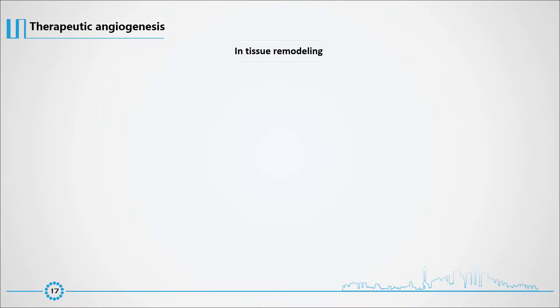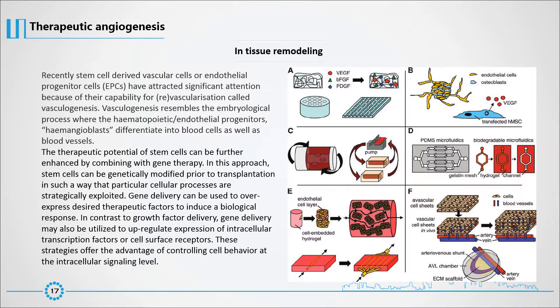Recently, stem cell-derived vascular cells or endothelial progenitor cells (EPCs) have attracted significant attention because of their capability for re-vascularization called vasculogenesis, which resembles the embryological process where hemangioblasts differentiate into blood cells as well as blood vessels. The therapeutic potential of stem cells can be further enhanced by combining with gene therapy. In this approach, stem cells can be genetically modified prior to transplantation so that particular cellular processes are strategically exploited. Gene delivery can be used to overexpress desired therapeutic factors or to upregulate expression of intracellular transcription factors or cell surface receptors, offering the advantage of controlling cell behavior at the intracellular signaling level.